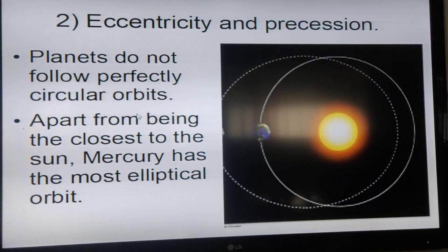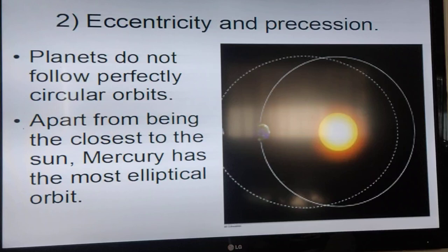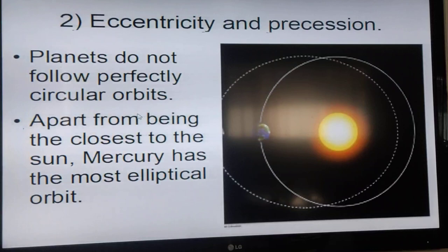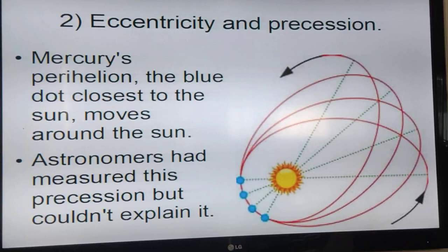Another concept is eccentricity and precession of planets. Planets do not follow perfectly circular orbits. Mercury, apart from being the closest to the sun, has the most elliptical orbit. At perihelion, the point where Mercury is the closest to the sun, astronomers noticed that it didn't go back to the same point like Newton said.